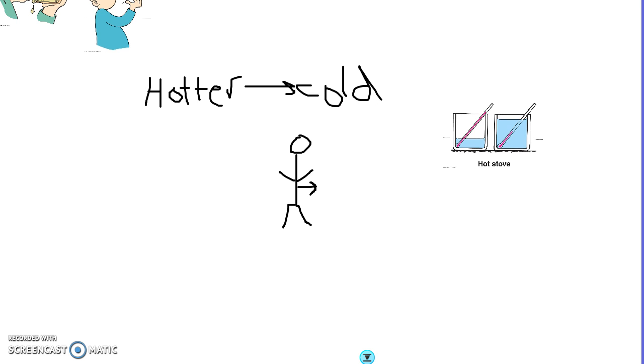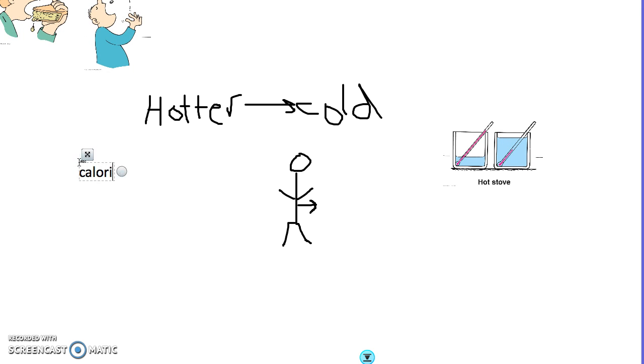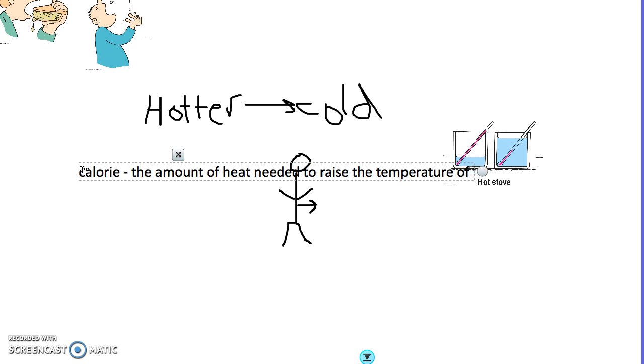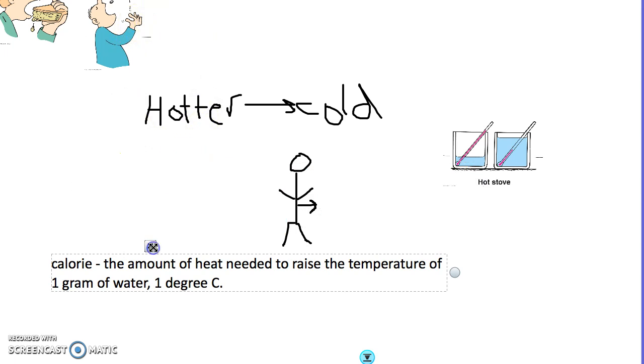Now, when we want to measure the amount of heat in something, we use a unit called the calorie. And everybody's kind of familiar with that. We talk about it with our food. We talk about how many calories we have, but there is a difference. We'll talk about that here in a second. A calorie. Calories are the units that we use to measure heat, and basically, one calorie is the amount of heat needed to raise the temperature of one gram of water, one degree Celsius. So a calorie is the amount of water needed to raise the temperature of one gram of water, one degree Celsius.